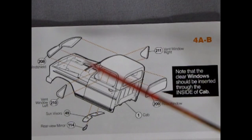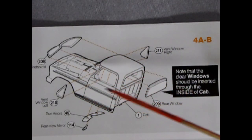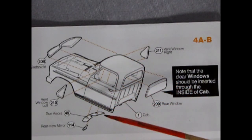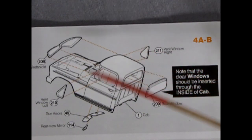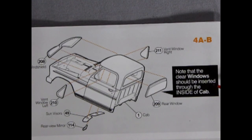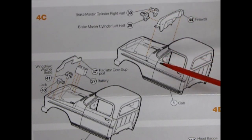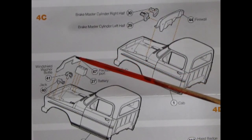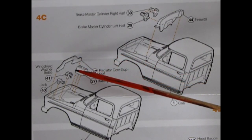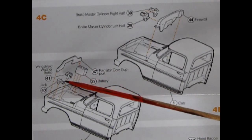Now you're going to have to paint your cab first which we can see in our painting instructions toward the back but once that is done you can add in all your mirrors and windows and the sun visors. Note that the clear windows should be inserted through the inside of the cab. And we can complete our cab by taking our master cylinder right and left hand side gluing them together and gluing them to the firewall which then glues into the cab. Following that we can glue in our radiator support, our battery and our windshield washer bottle and our jack.